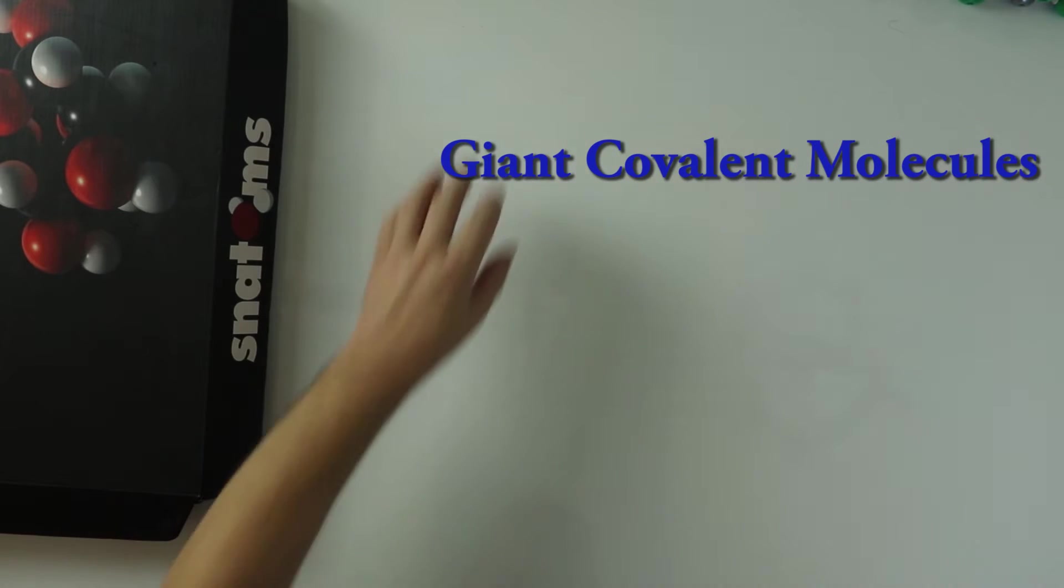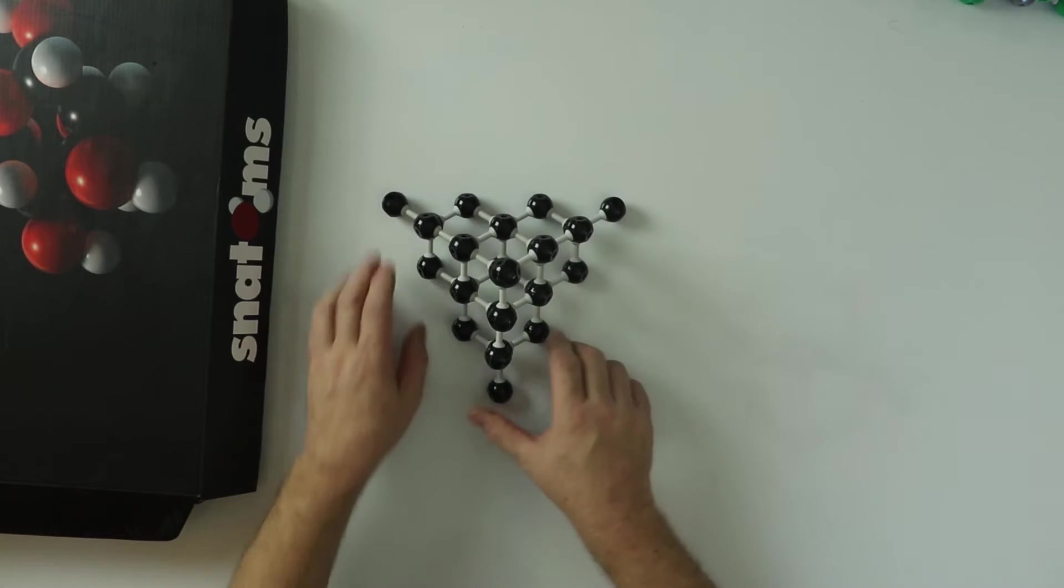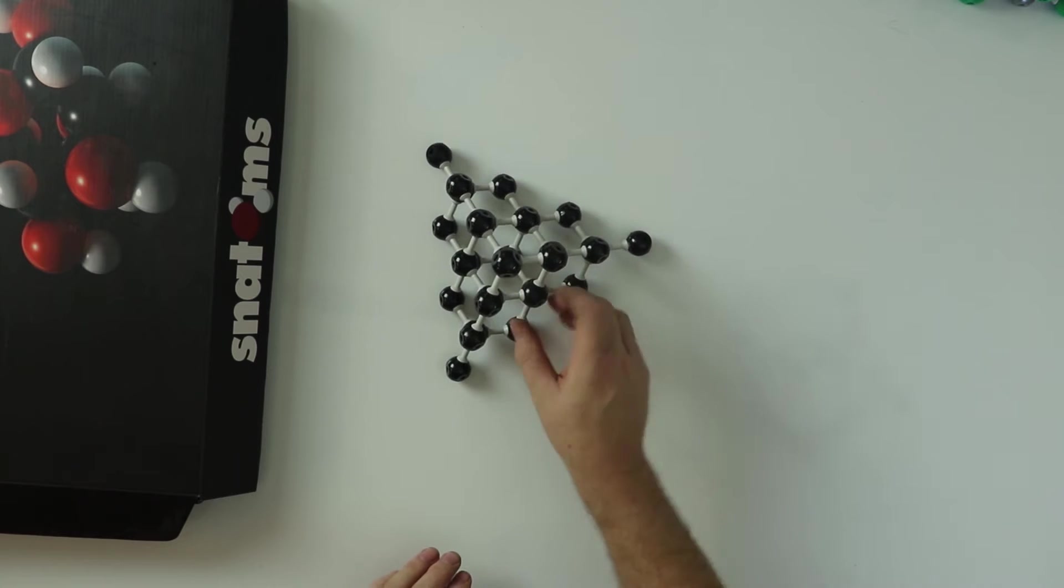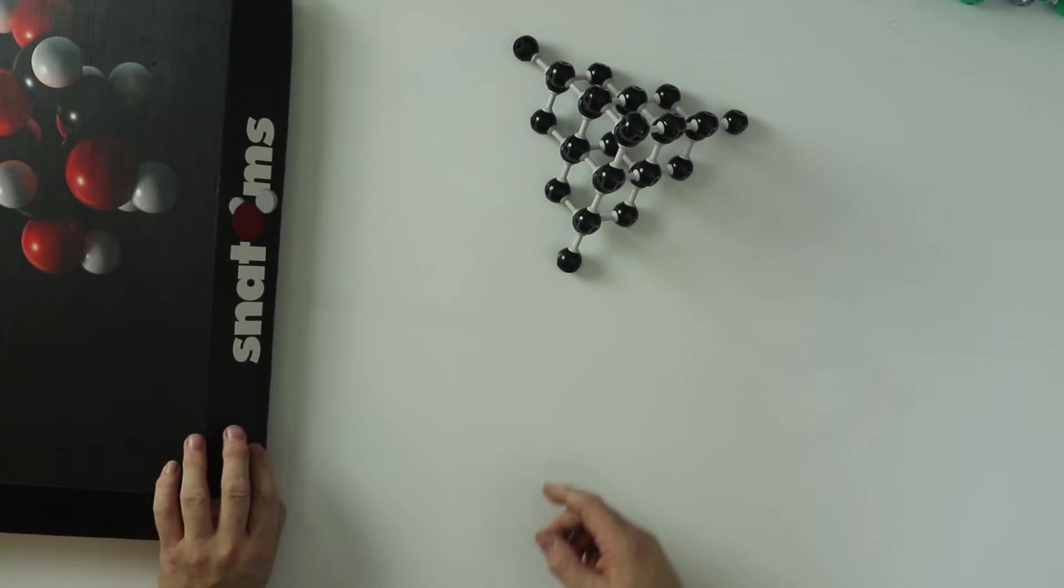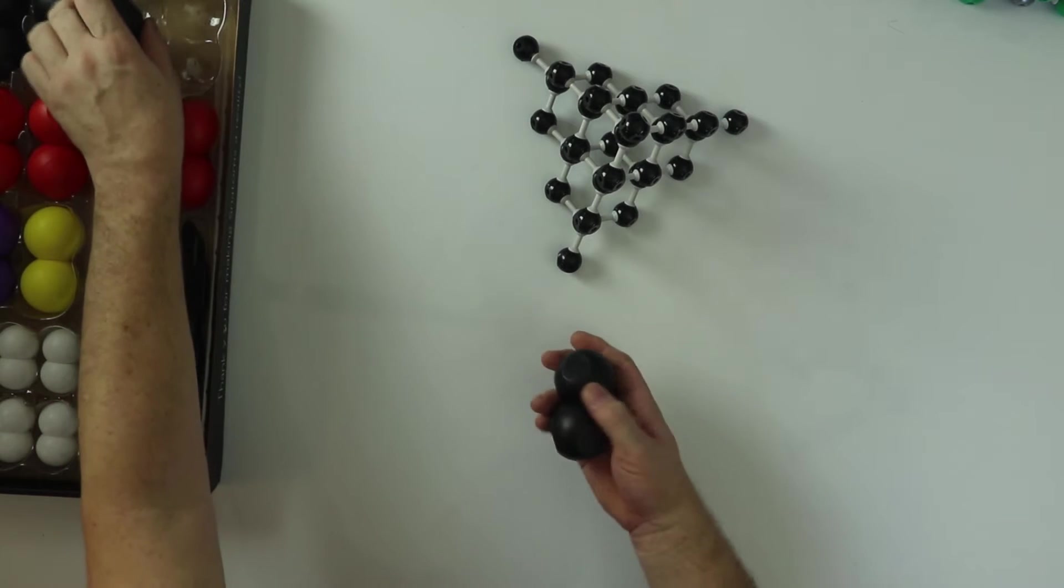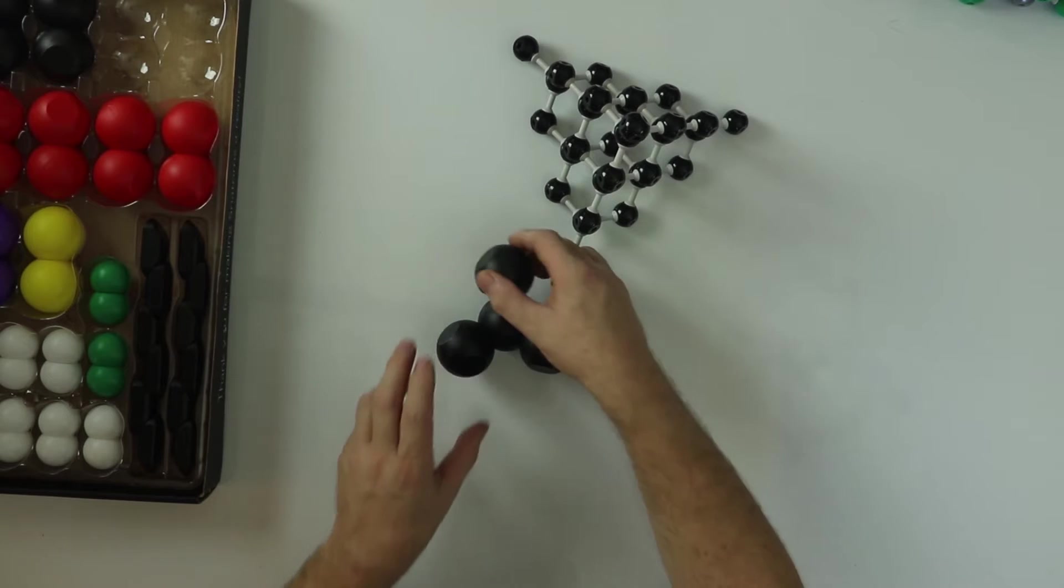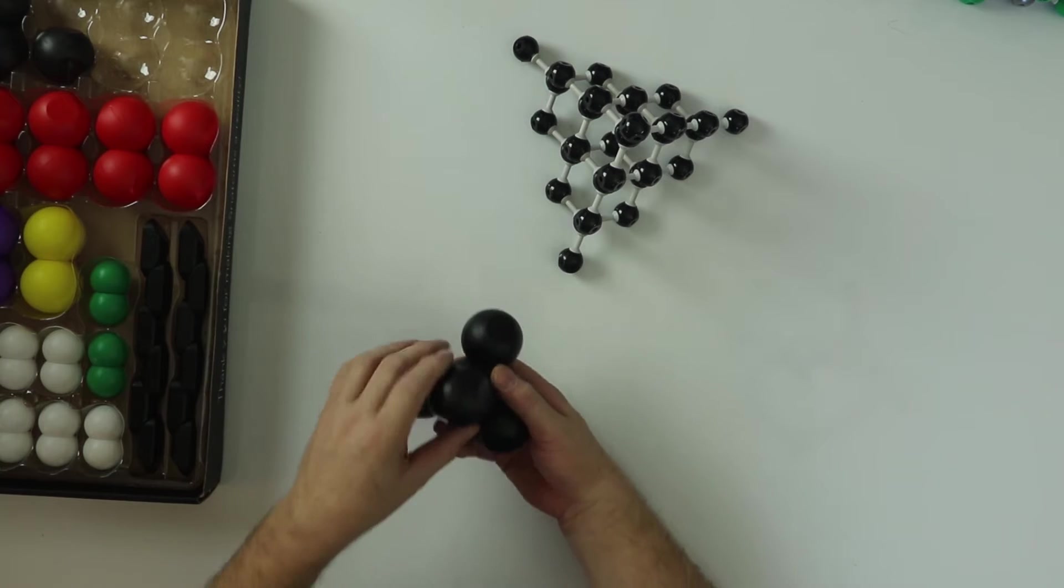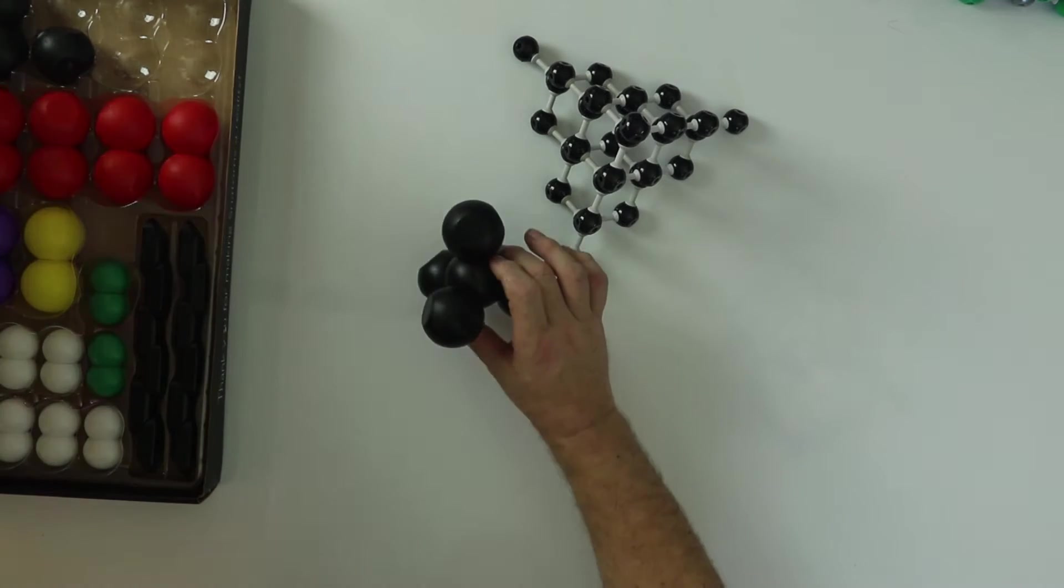Let's take a look at some larger covalent molecules. Here we have the structure of carbon in the form of a diamond. Let's have a look at this in another way. In diamond, we have one carbon atom that is joined to four other carbon atoms, and it gives this tetrahedral shape.